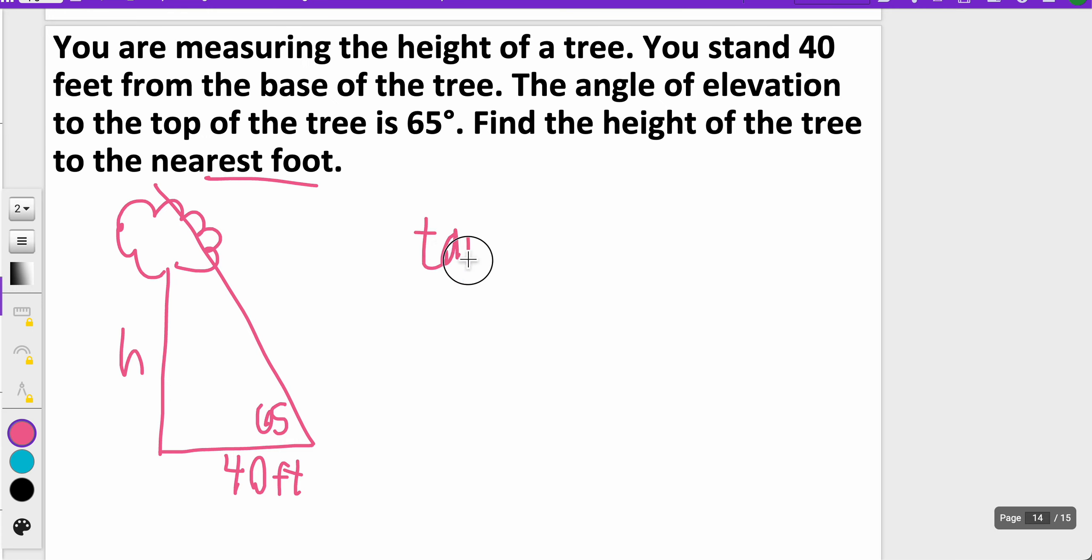This is tangent of 65 degrees is equal to opposite over adjacent, multiplying both sides by 40, so that these 40s cancel out. So h is equal to whatever 40 times the tangent of 65 degrees is.